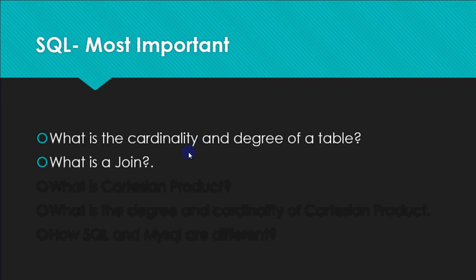Then comes what is the cartesian product. When we fetch the data from two tables and we miss the condition to join the table, you're getting the data from two tables but you have not given the condition to join the tables then it becomes cartesian product.